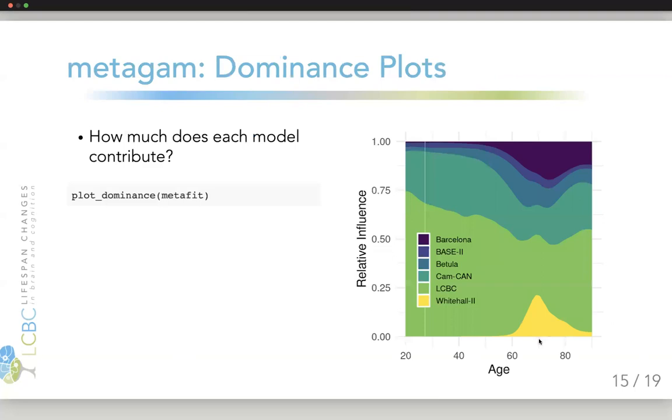Here we see it for age, for example. And we see that at around 70 years of age, there are many different studies that contribute quite a lot, because that's where actually all the groups in this case had data. Whereas if you look at 20 years of age, it's the LCBC and the CAMCAM data that completely dominate, because they had the overwhelming majority of data for those ages.